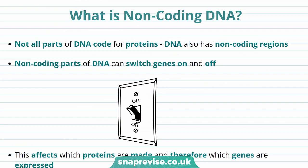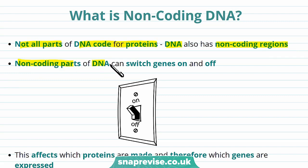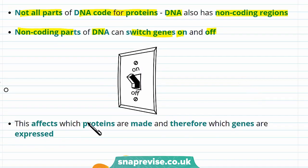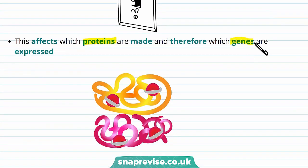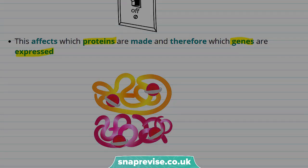So far we've talked about coding DNA, and that's the bit that has genes on it. But what's non-coding DNA? Well, not all parts of DNA code for proteins. DNA also has non-coding regions, and the purpose of these non-coding regions is that they can switch genes on or off. This is really important as it affects which proteins are made, and therefore which genes are expressed. This is crucial as you don't need to express all your genes simultaneously all the time, meaning that switching genes on or off can help make an organism more efficient.